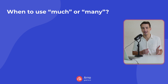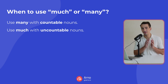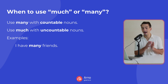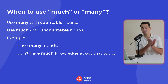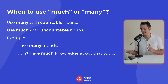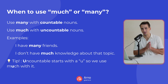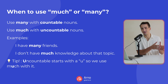Another important concept in the context of countable and uncountable nouns is when to use 'much' or 'many.' Simply put, you use 'many' with countable nouns, and 'much' with uncountable nouns. For example, 'I have many friends' — friend is countable, so we use 'many.' And 'I don't have much knowledge about that topic' — knowledge is uncountable, so we use 'much.' A useful trick: 'uncountable' starts with a U, and 'much' also has a U, so much is used with uncountable nouns.